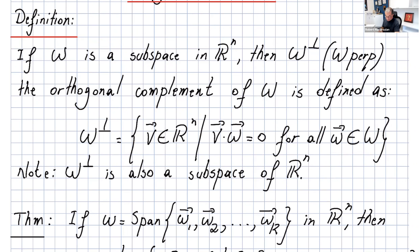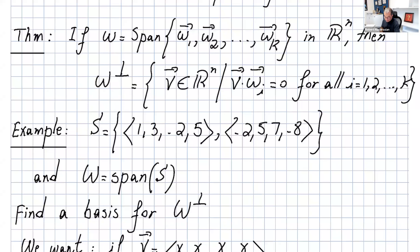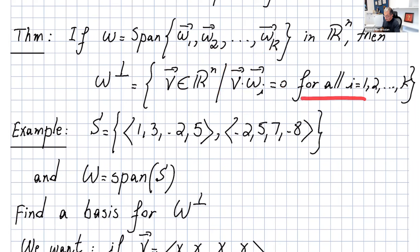Note that w-perp is also a subspace of Rⁿ. There is also a theorem: if w is the span of w1, w2, up to wk in Rⁿ, then w-perp is the set of vectors v in Rⁿ such that v dot wᵢ equals zero for all i equals 1, 2, up to k.